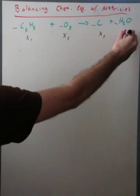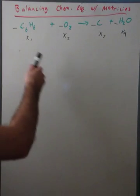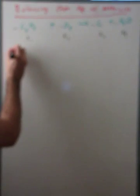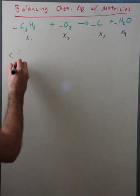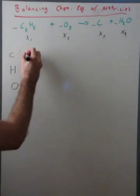x3 here and x4 all the way over here. So now we need to label each of the elements we have here. We're going to have one here for carbon, one here for hydrogen, one here for oxygen. So we have six carbons here in our first equation. For that we're going to have 6x1.